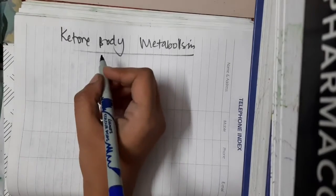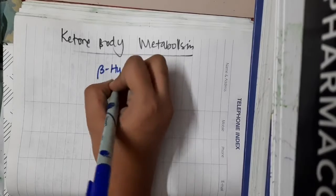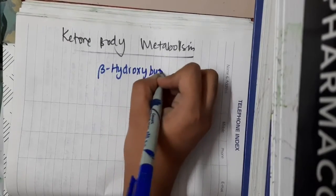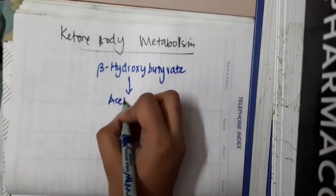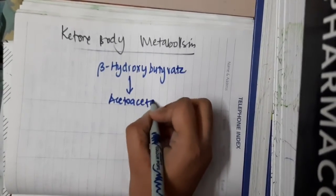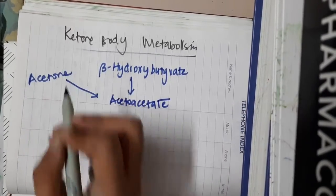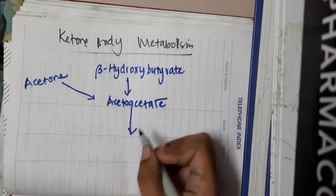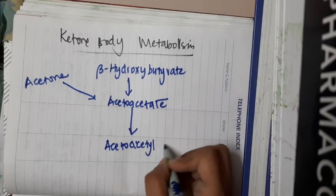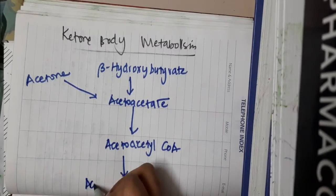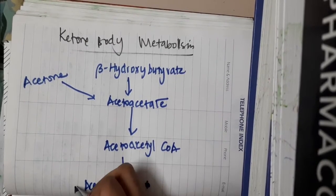Hello friends, let us now learn some important points about ketone body metabolism. Beta-hydroxybutyrate, in the presence of the enzyme beta-hydroxybutyrate dehydrogenase, forms acetoacetate. Acetone will also give rise to acetoacetate. This acetoacetate, in the presence of thiophorase, forms acetoacetyl-CoA, which in the presence of thiolase, forms two molecules of acetyl-CoA.